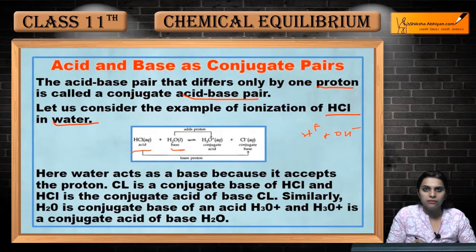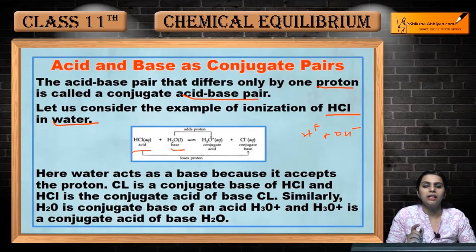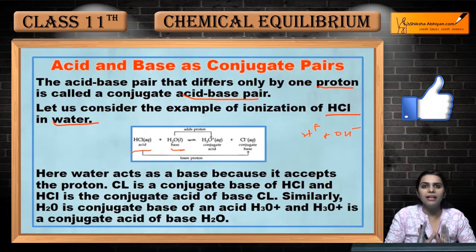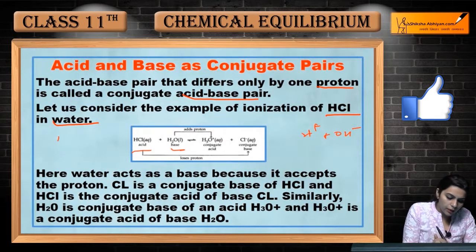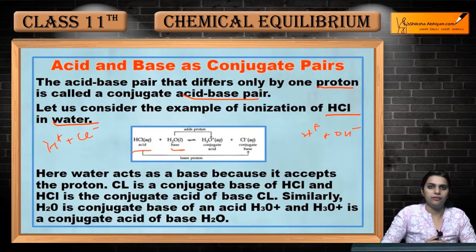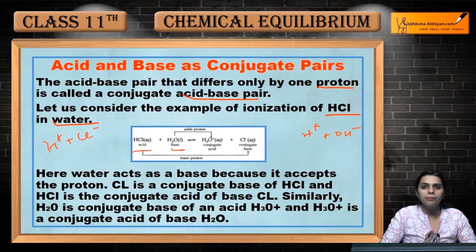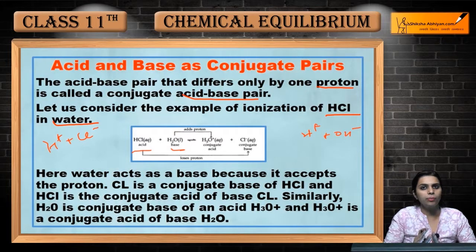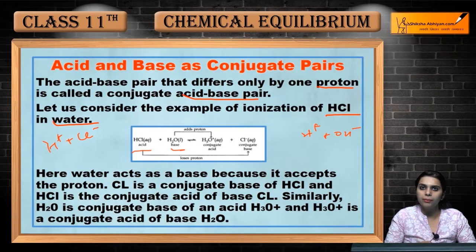Who will accept H-positive? HCl is our strong acid, so first we will dissociate it into H-positive and Cl-negative. HCl has donated its proton because it is an acid. The property of HCl is that it will donate its proton. H2O, as the base, has accepted the proton.